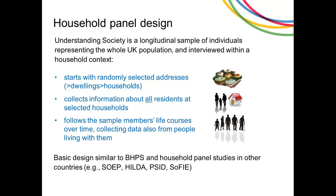In total we have approximately 100,000 individuals, of whom 60,000 are adults and 6,000 are youths interviewed separately. Understanding Society is a longitudinal sample representing the whole UK population, interviewed within a household context. We started by randomly selecting addresses, then dwellings and households within those, collecting information about all residents. We then follow sample members' life courses over time — so if a young person leaves home and forms their own family, new household members also become part of the study.